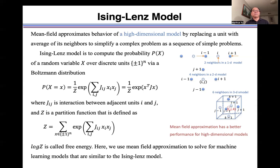Mean field approximation was first proposed in Ising-Lenz model. Ising-Lenz model is to compute the probability P(X) of a random variable X over discrete units via Boltzmann distribution here.